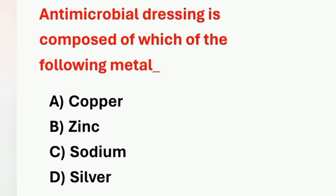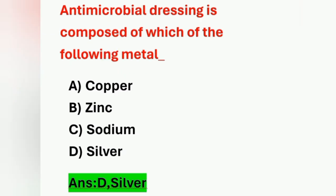Next question: Antimicrobial dressing is composed of which of the following metals? Options: A) Copper, B) Zinc, C) Sodium, D) Silver. Which material is present in antimicrobial dressing? Antimicrobial dressing consists of silver. Option D is the correct answer.